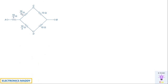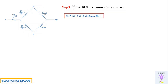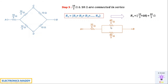After redrawing with the 10/3 ohm star resistors in place, we see 10/3 ohm and 10 ohm connected in series on two branches, giving 40/3 ohms each. The network then has two 40/3 ohm resistors connected in parallel.